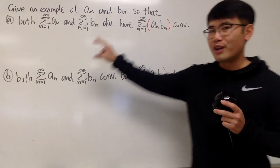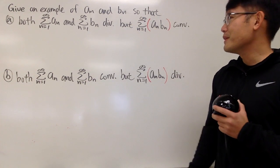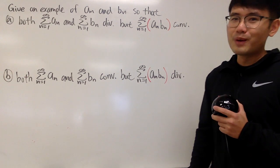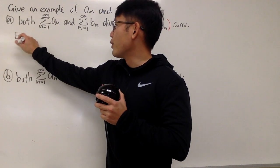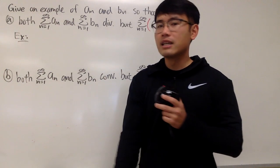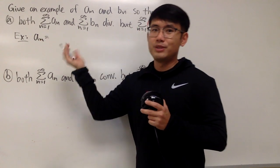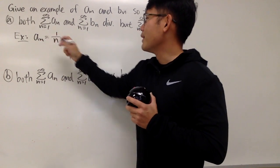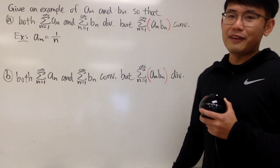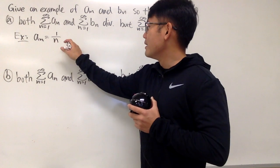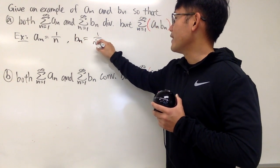Let's talk about Part A first. How can we make this happen? Let's talk about how we can get some divergent series. Let me just pick aₙ to be — I want a divergent — so let's just do 1 over N. And then I want another divergent. bₙ, I want this to be 1 over the square root of N.